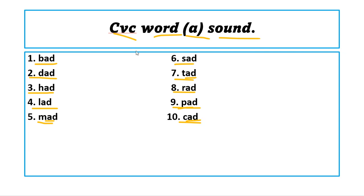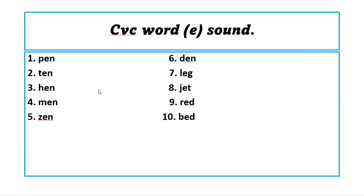Number six, sad. When you're sad of course you're lonely. Number seven, tad. This one is small, tad is a term for small. And number eight, rad. Number nine, pad. And number ten, cad. These are our CVC words a sound.